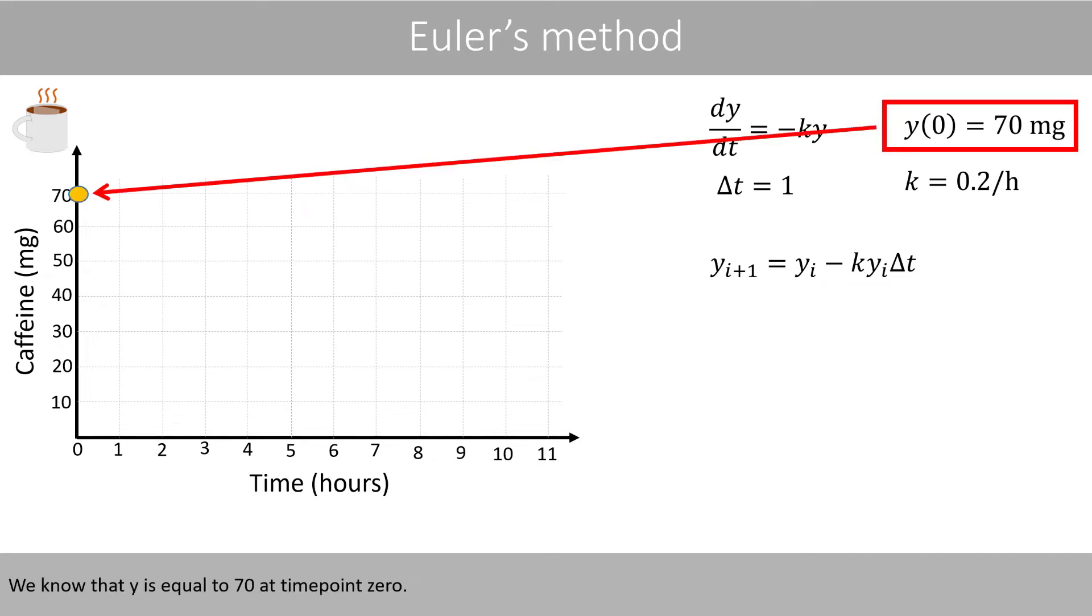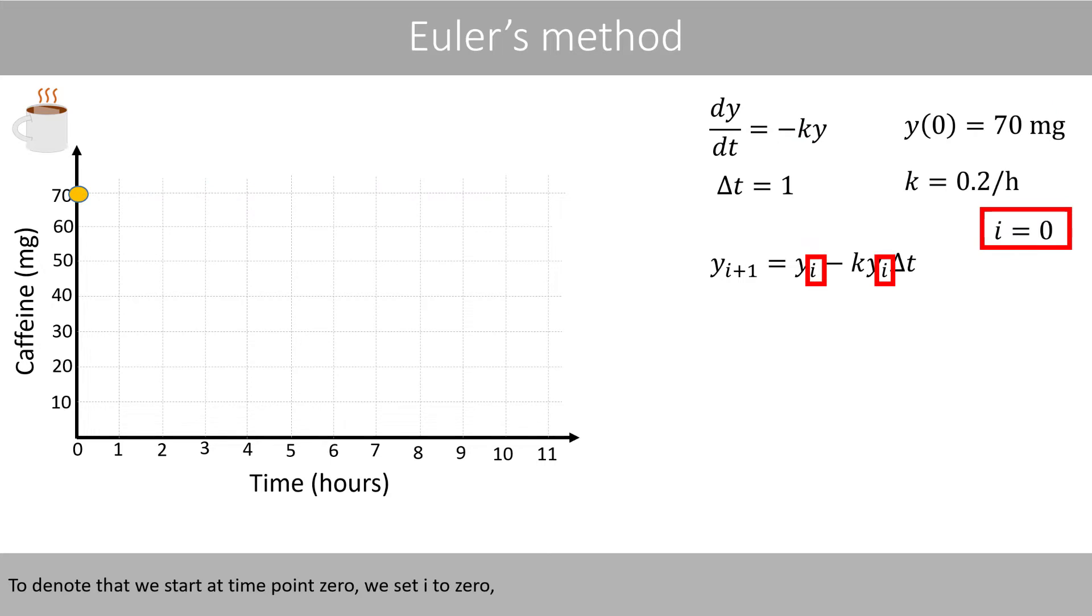We know that y is equal to 70 at time point 0. To denote that we start at time point 0, we set i to 0, which means that we set y0 to 70 in this equation.